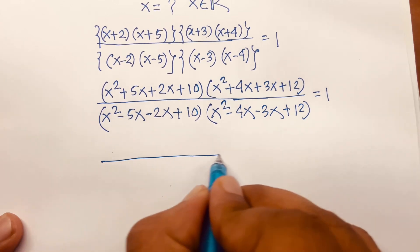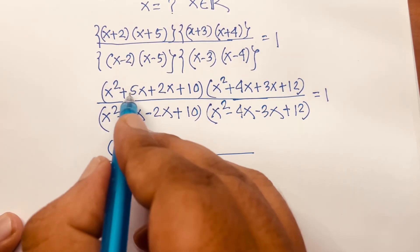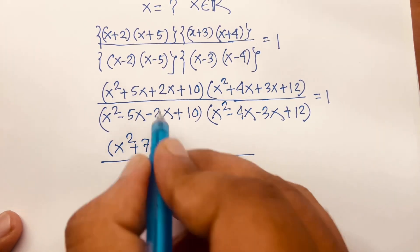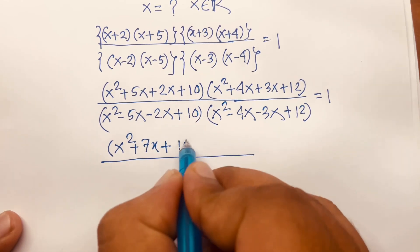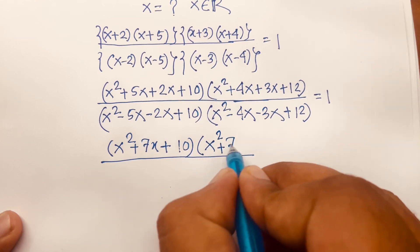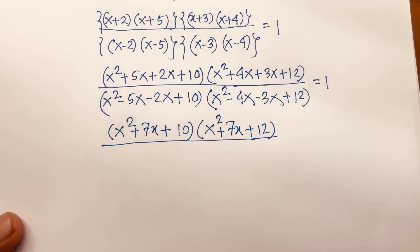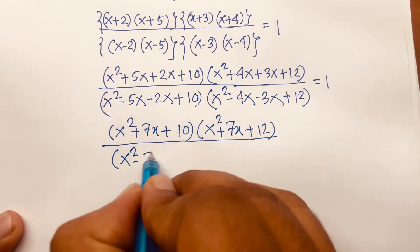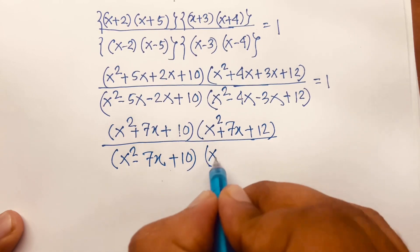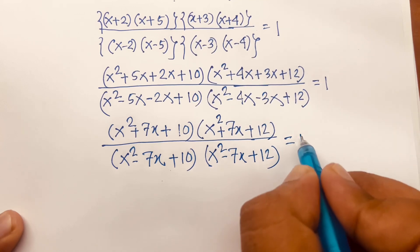Then I can say here is x squared and 5x plus 2x gives 7x, plus 10. So the numerator simplifies to x squared plus 7x plus 10, times x squared plus 7x plus 12, and the denominator is x squared minus 7x plus 10, times x squared minus 7x plus 12, equal to 1.